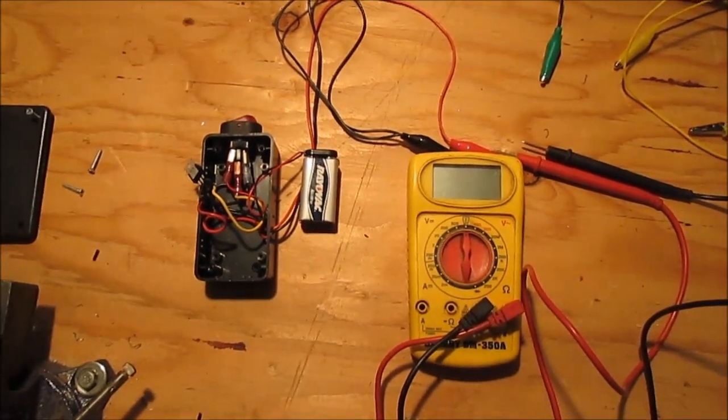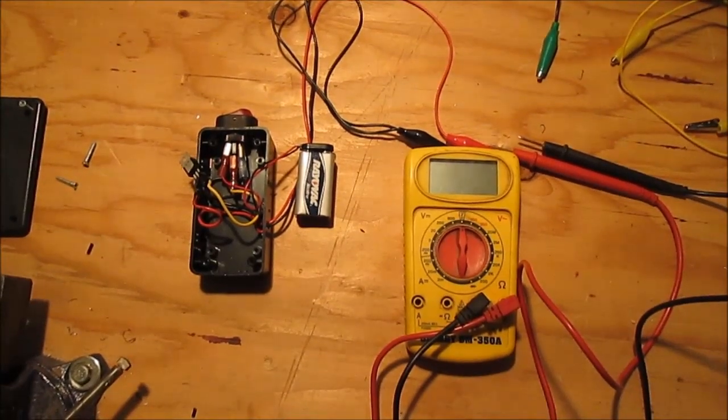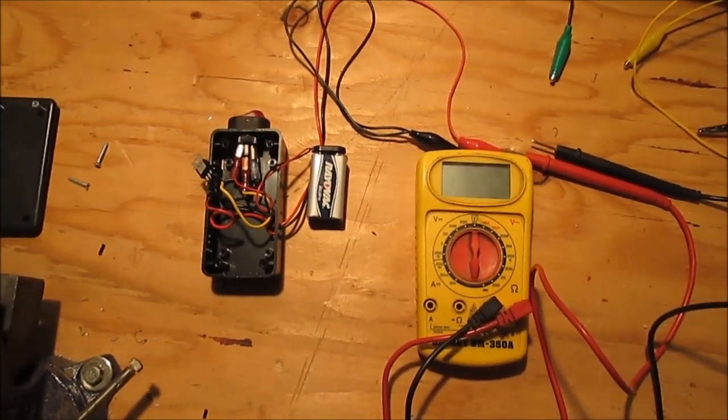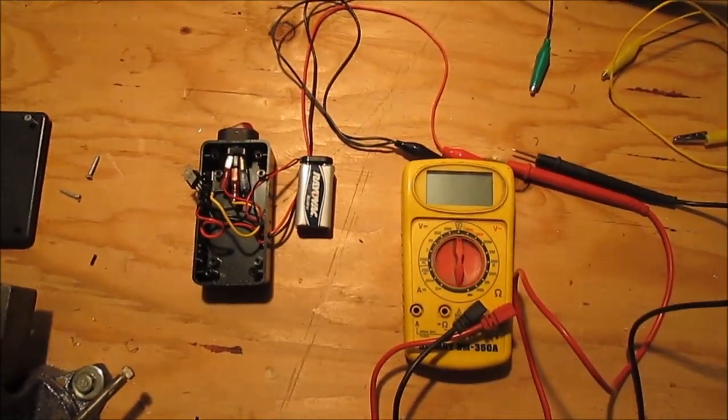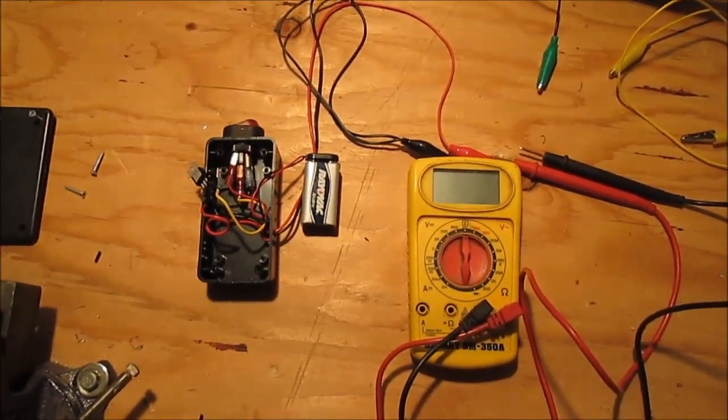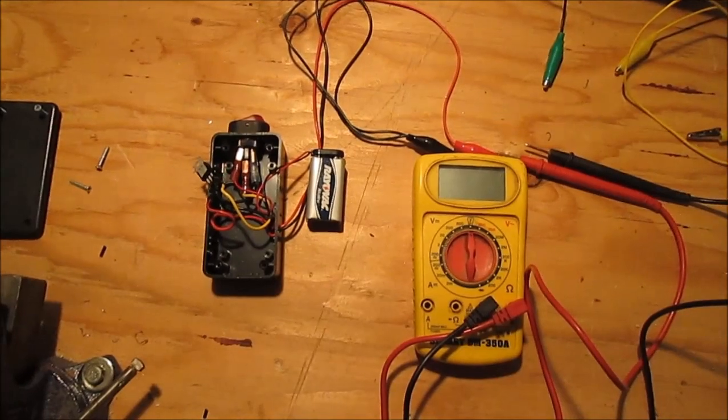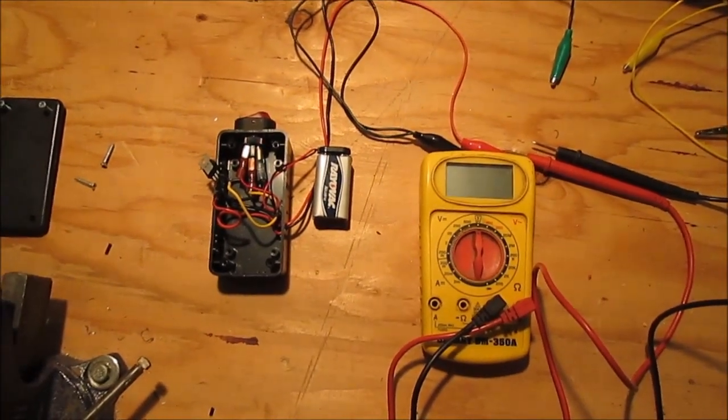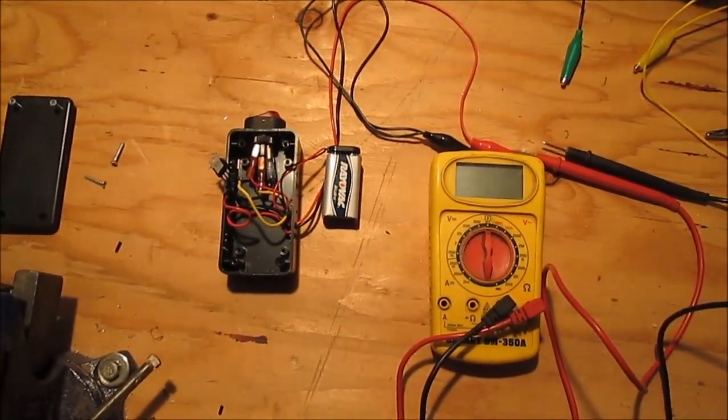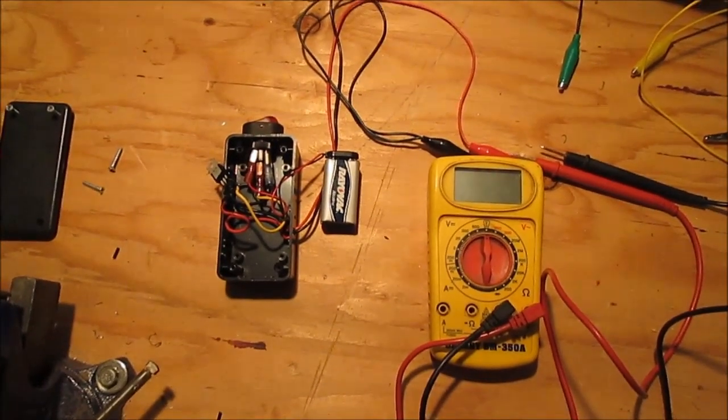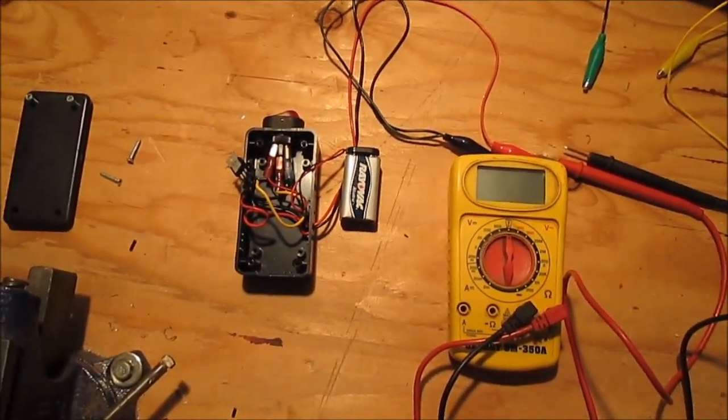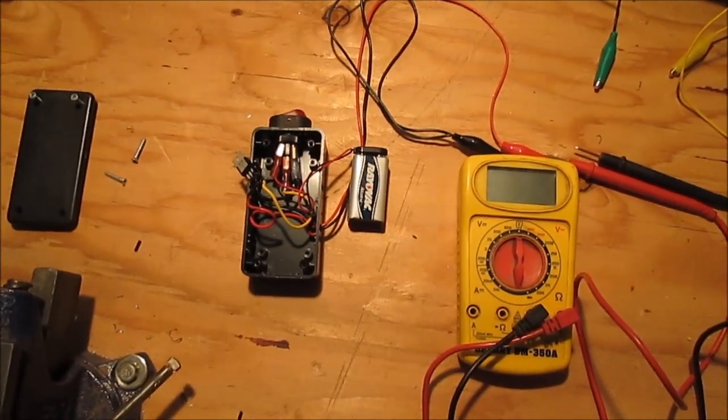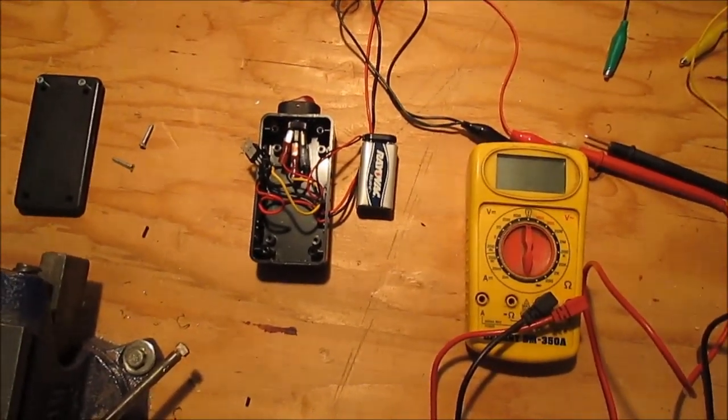I'm needing to adjust the throttle position sensor on my Polaris Sportsman XP850, and I found out you can do it with about $25 worth of parts from Radio Shack and a voltmeter. The information was a little difficult to figure out on how to build this 5 volt power source from Radio Shack parts.